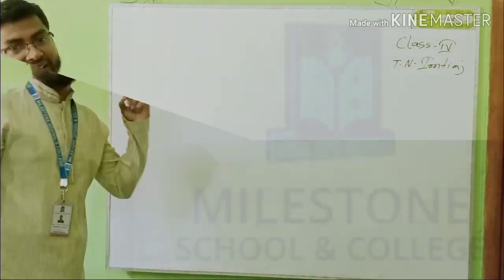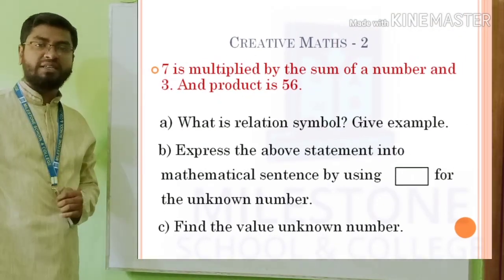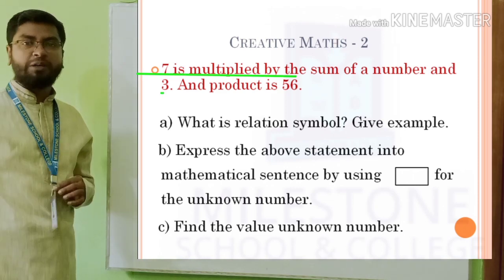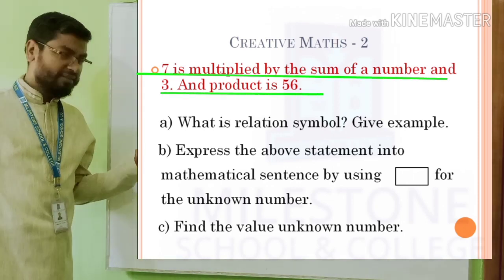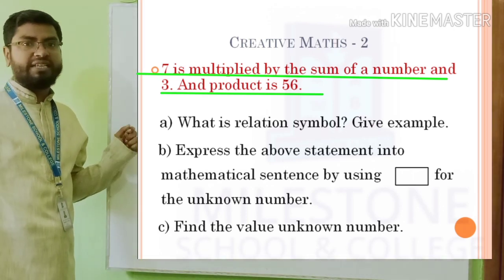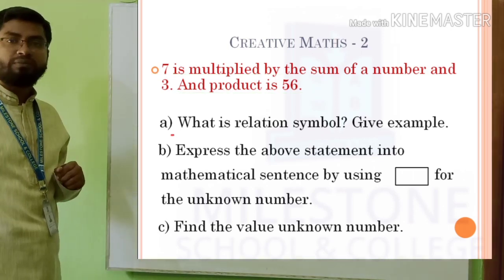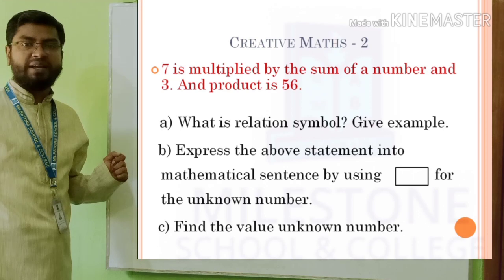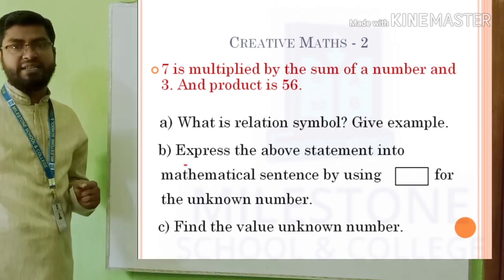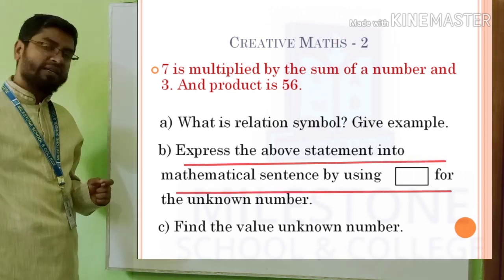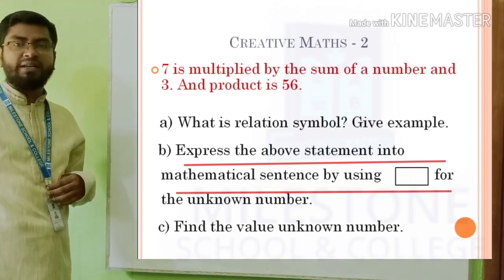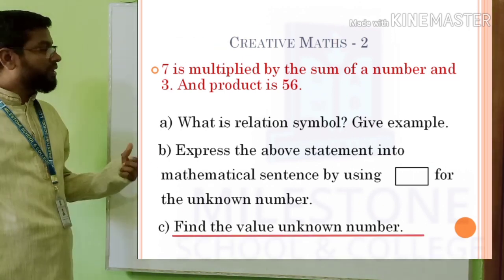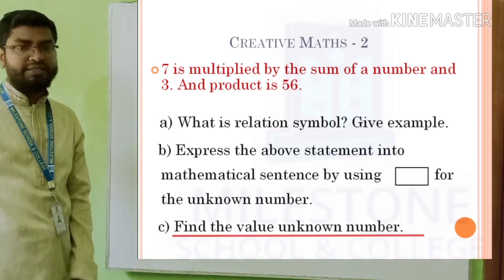Now the second creative math. Follow the board — collect it. I am reading: 7 is multiplied by the sum of a number and 3, and the product is 56. First question: what is the relation symbol? Give an example. B number: express the statement into a mathematical sentence by using blank for the unknown number — we will think the unknown number is blank, then make a statement. C number: find the value of the unknown number. Please collect it.